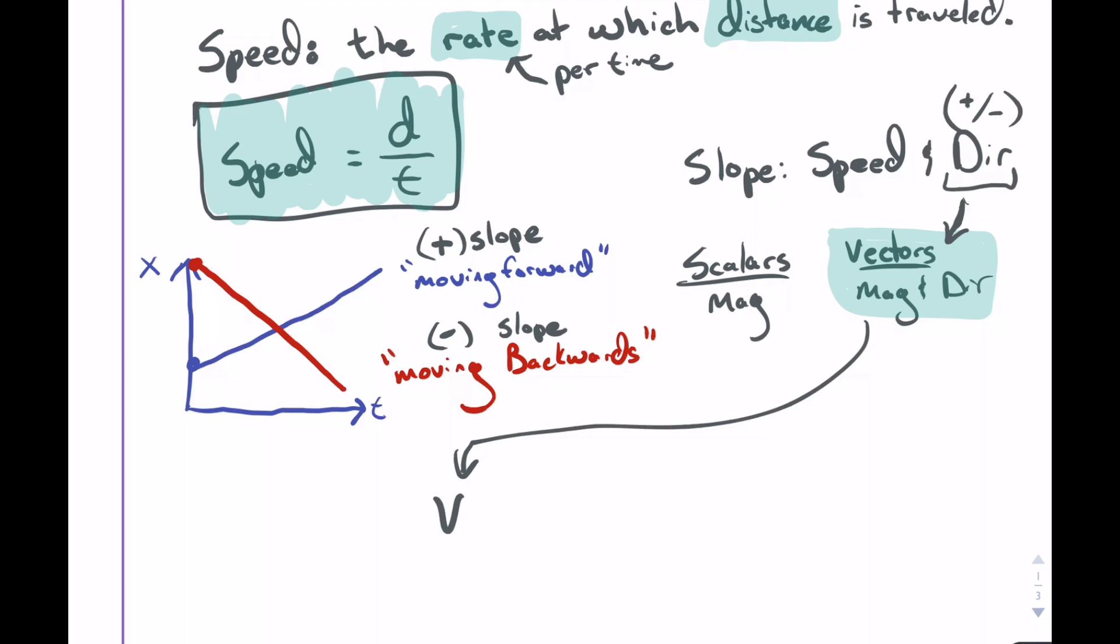What that tells us is that we can use the slope on a position versus time graph to tell us the object's velocity. The simplest definition I have for velocity is the way to think about it: it's how fast an object's going in a certain direction. So we say it's speed with a direction.